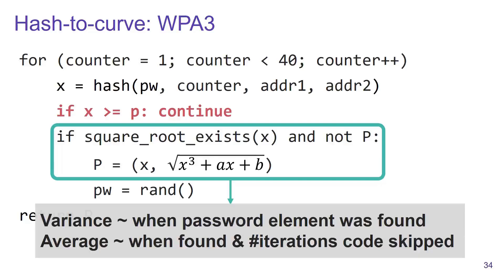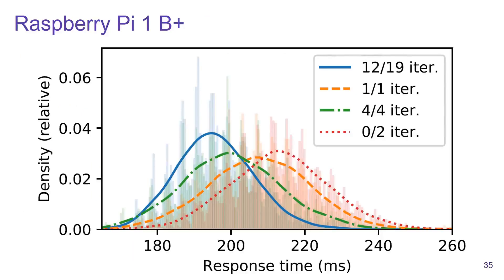So now the question is: can we measure these things in practice? To determine this, we again performed an experiment against a Raspberry Pi that was running an open source implementation of WPA3.